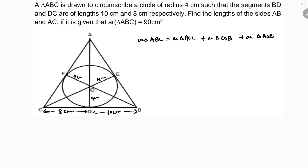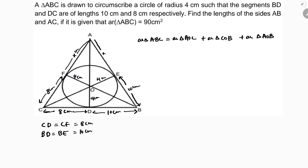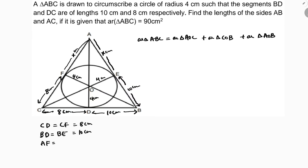First, CD equals CF which is 8 centimeters, and BD equals BE which is 10 centimeters — because the length of the tangents drawn from an external point are equal. I'll consider AF equals AE equals X centimeters, for the same reason.